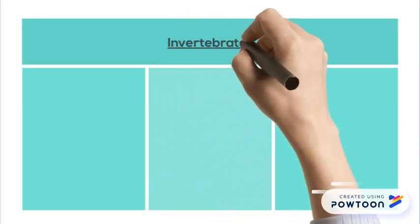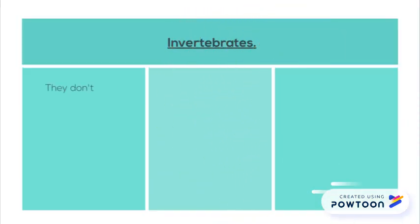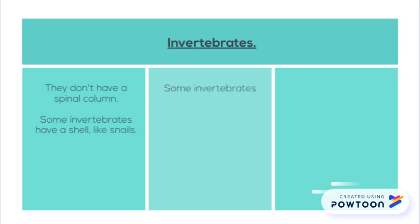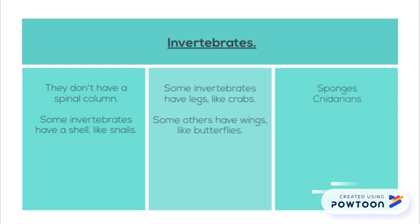Characteristics of invertebrates. They don't have a spinal column. Some invertebrates have a shell, like snails. Some invertebrates have legs, like crabs. And some others have wings, like butterflies. The groups of invertebrates are sponges, cnidarians, worms, molluscs and arthropods.